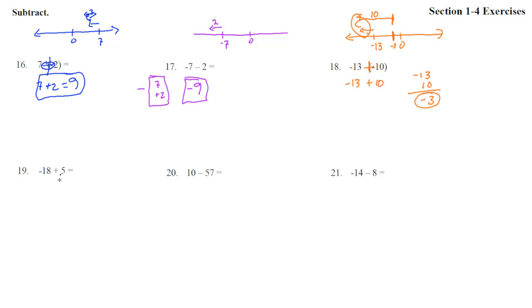Number 19. Negative 18 plus 5. They are opposite signs. So this is really negative 18 and a 5. They're opposite. So this is a subtraction. 13 with the negative winning. On a number line, you can see that. If here's 0 and here's negative 18. And then we add, which is that way, 5 [counts 1, 2, 3, 4, 5]. We end up somewhere down there. Yeah, negative 13.